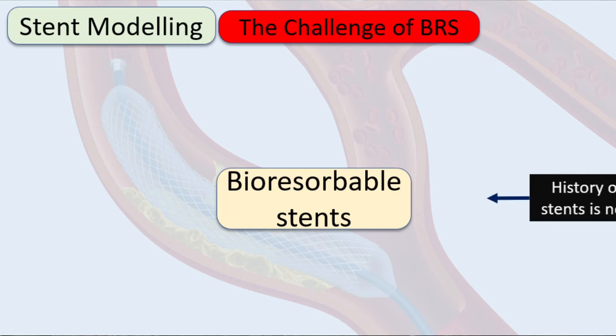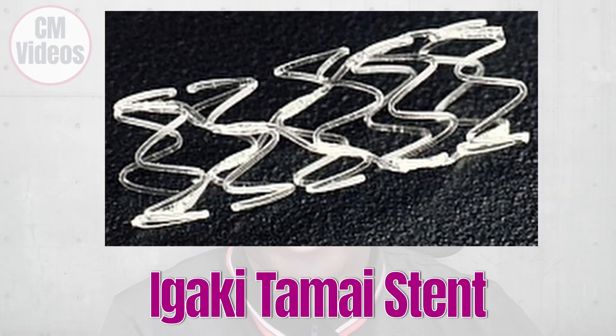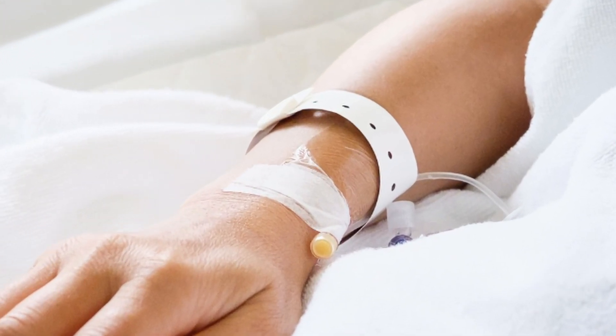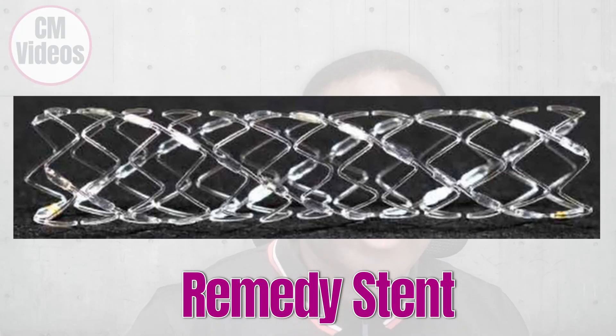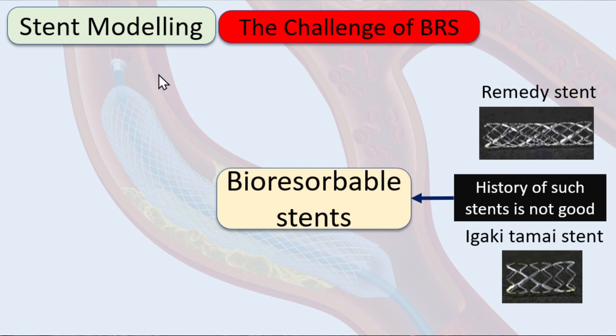There are challenges associated with bioresorbable stents. First, the history for such stents is not good. Around 1990, a company in Japan manufactured the Igaki-Tamai stent, the very first bioresorbable stent. It started off well but after a while patients experienced problems and it was discontinued. Around 2000, the company made another stent called the Remedy stent, which is no longer used for coronary arteries but for arteries in the leg.